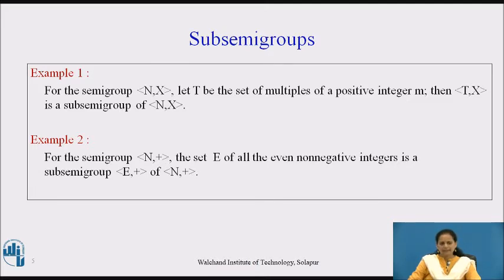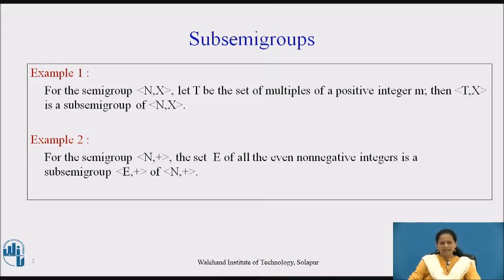Example 2: For the semi-group (N, +), where + is addition, the set E of all even non-negative integers forms a sub-semi-group (E, +) of (N, +). Since E is a set of all even non-negative integers and N is the larger set of natural numbers, whenever we perform addition of any two even non-negative integers, the result is also an even non-negative integer contained in E. Hence E is a subset of N, satisfying the definition of a sub-semi-group.